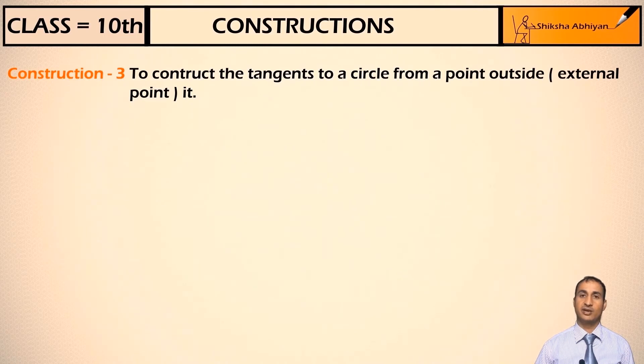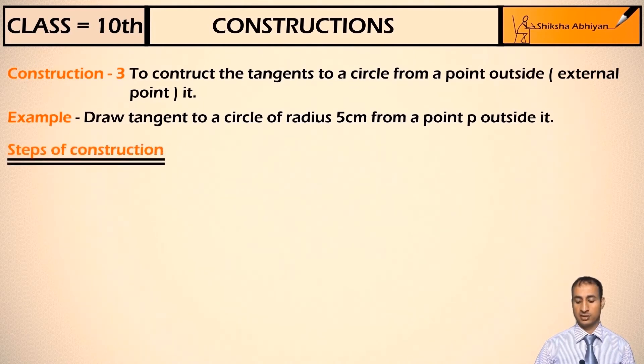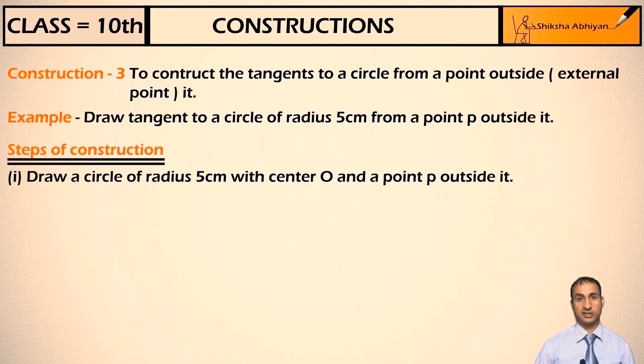Example: Draw tangent to a circle of radius 5 cm from a point P outside it. Steps of construction: First, draw a circle of radius 5 cm.